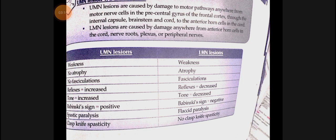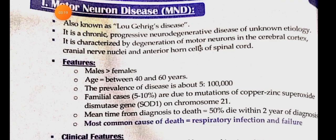We are now looking at motor neuron disease, also called Lou Gehrig's disease. In this, there is no known cause but neurodegeneration progressively starts. Motor neurons in the cerebral cortex degenerate, cranial nerve nuclei can degenerate, or anterior horn cells of the spinal cord can degenerate. It is more common in males, between 40 to 60 years. Most common cause of death is respiratory infection and failure.